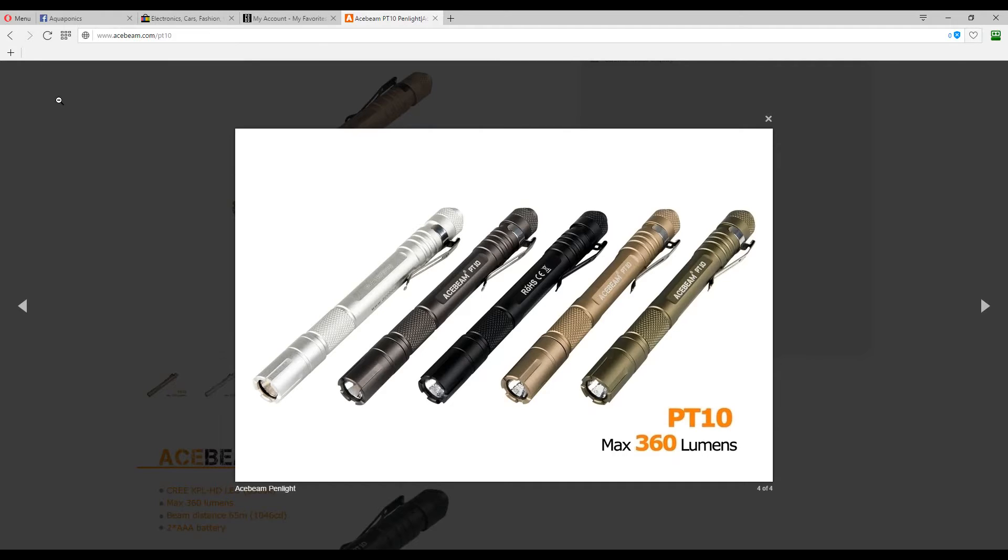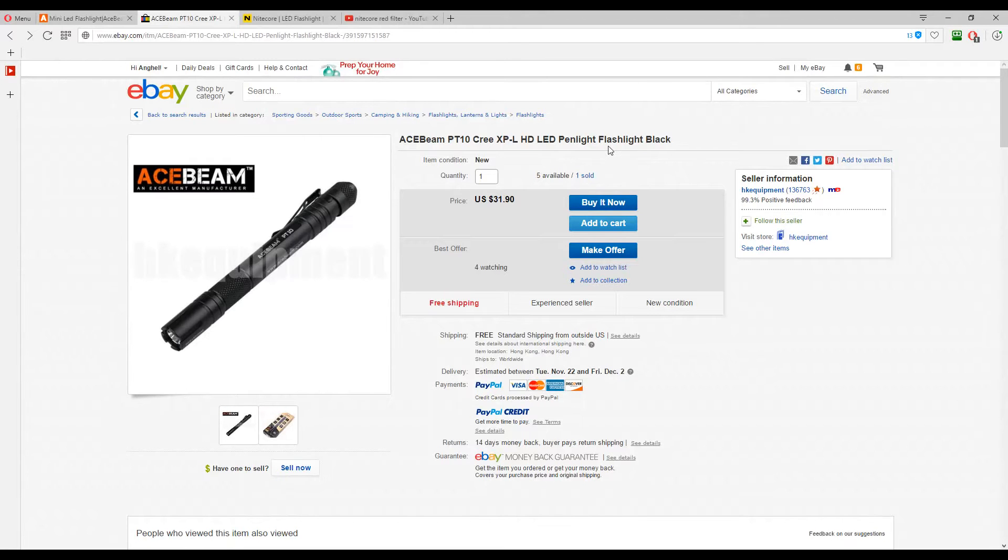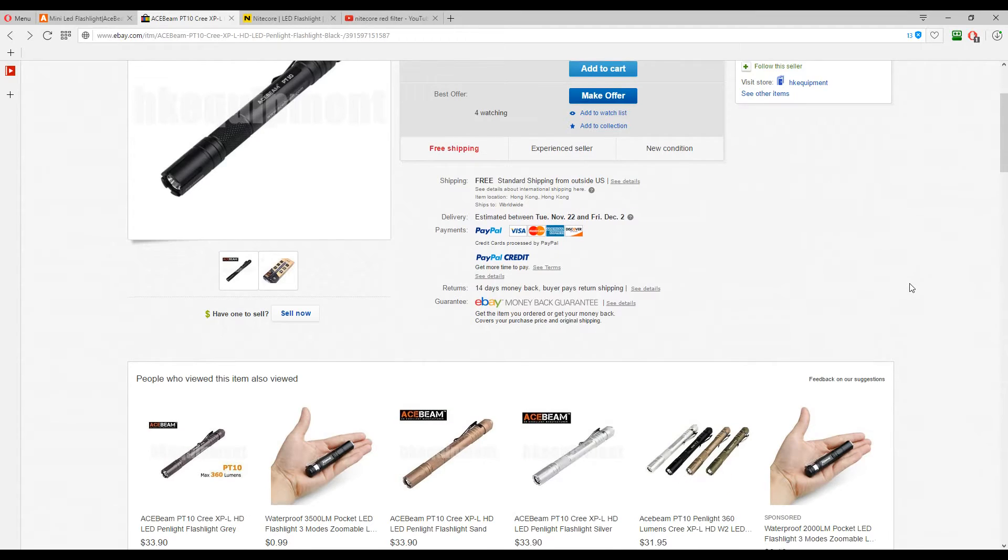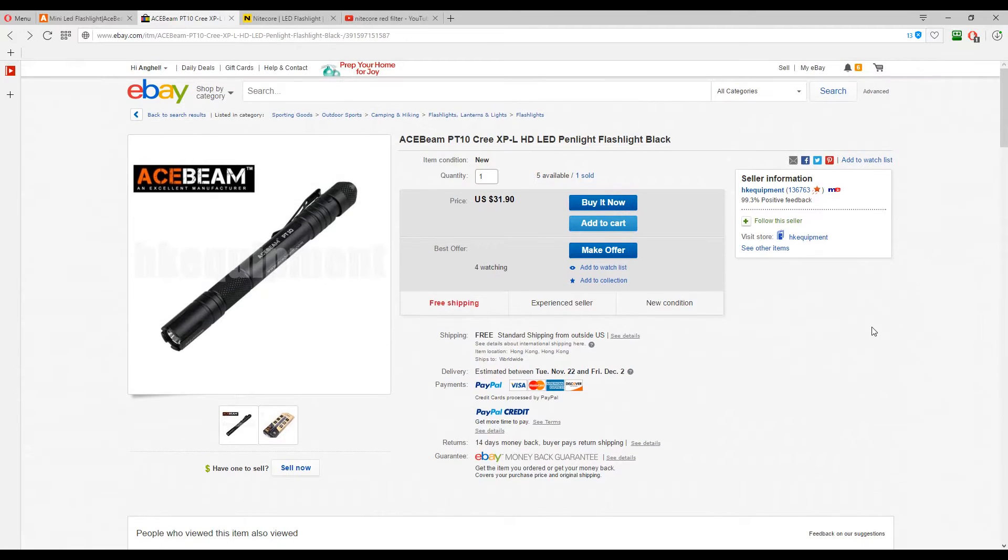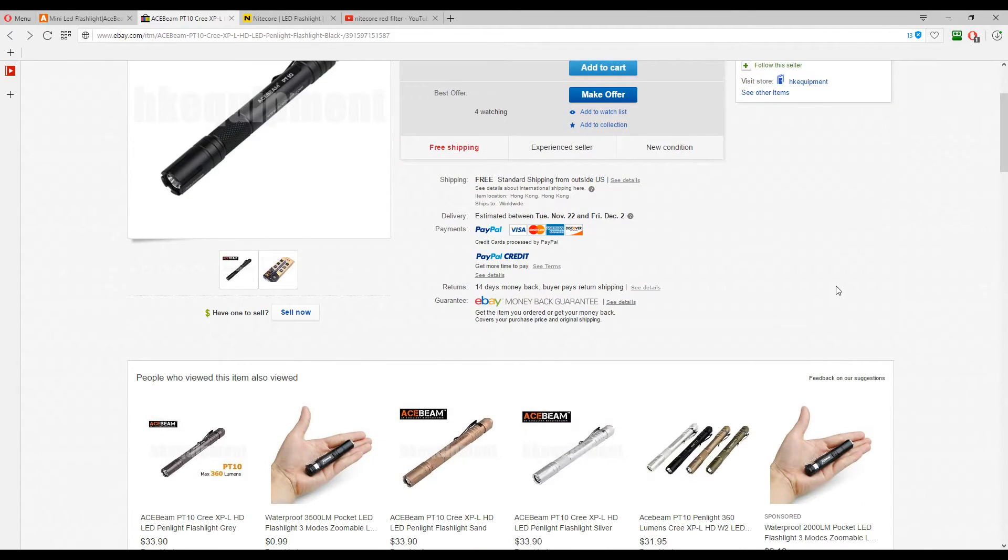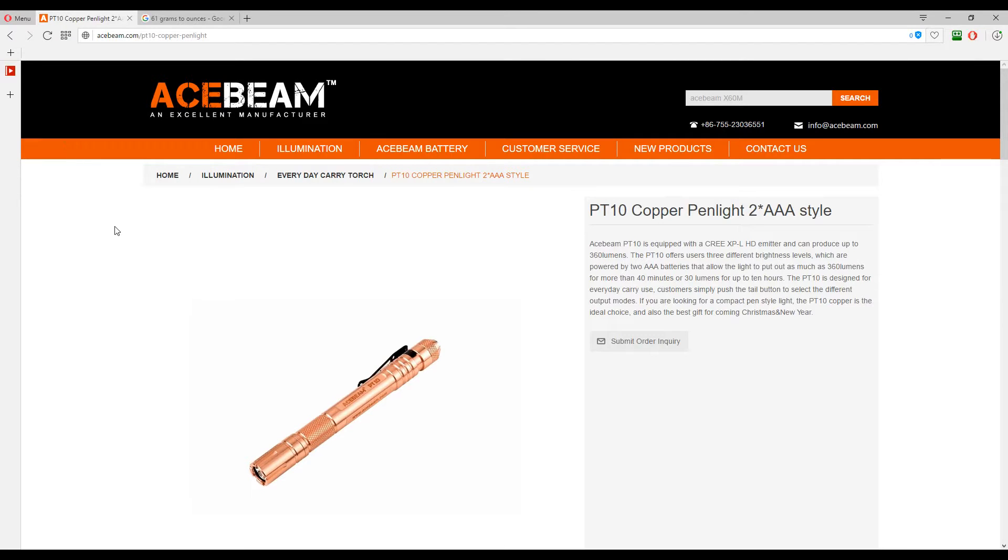It looks like it will be available in five different colors: silver, gray, black, tan, and OD green. Since the light is not available for purchase on the Acebeam website, I got it from eBay from HK Equipment. I suppose Hong Kong Equipment, that's where it came from. And it took only seven days to come, it was shipped by airmail, so it was pretty fast. I'm super happy with it. On the website I see they will have a copper version of the PD10.